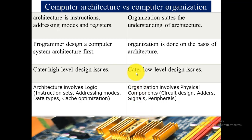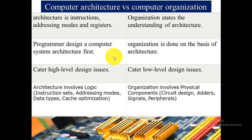The fourth difference is that computer architecture covers instructions, addressing modes, and registers, while computer organization provides the understanding of the architecture. The fifth difference is that a programmer designs the computer system architecture first, and then organization is done on the basis of that architecture.